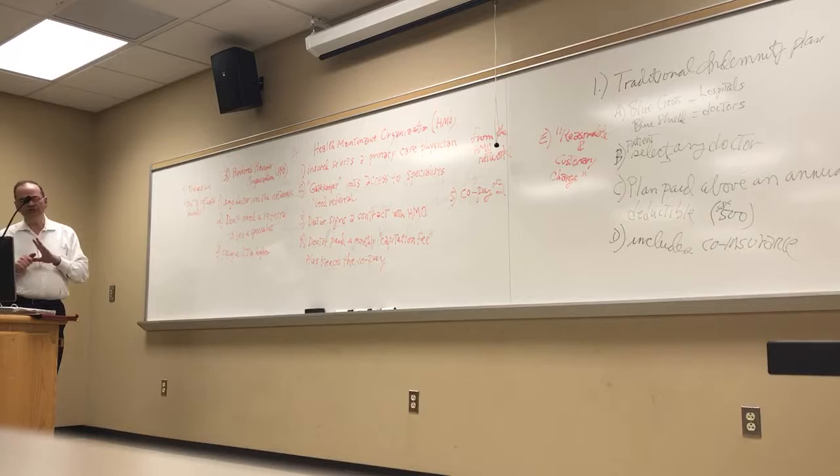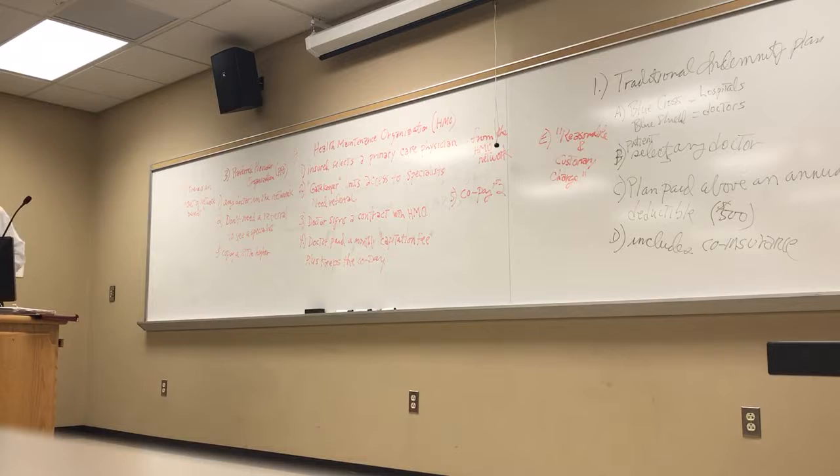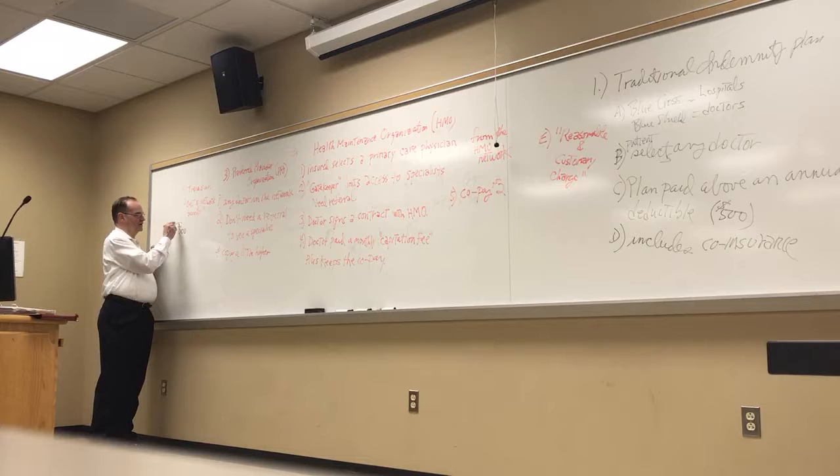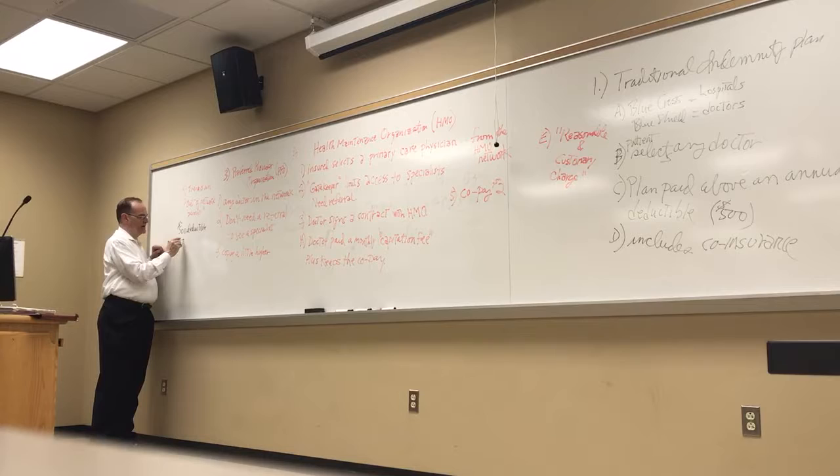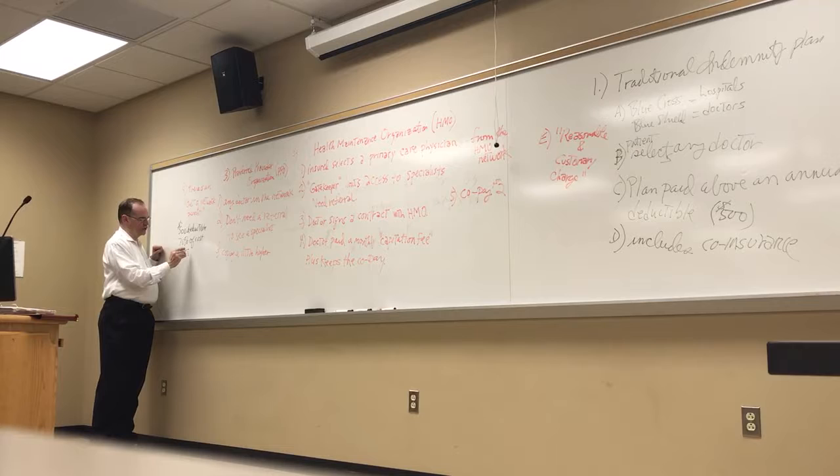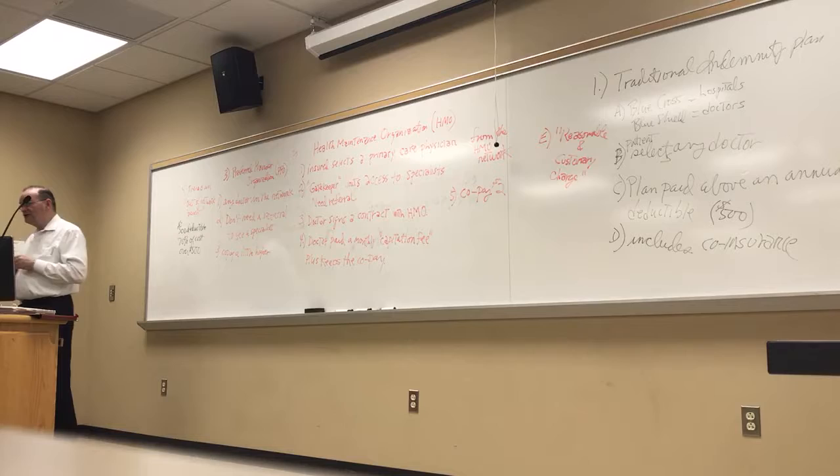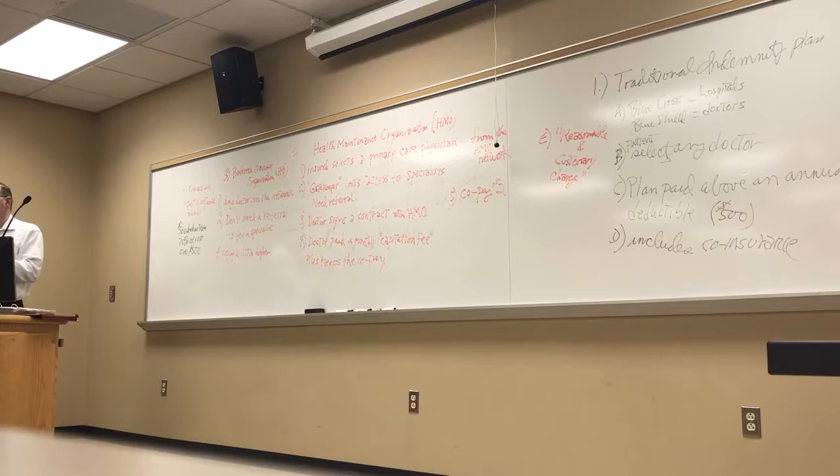Usually the way it works is there's a $500 deductible and they pay 70% of the cost over the $500. So they're making you eat the $500 and they're punishing you for not using one of their doctors, and they're also making you co-insure 30% of the cost over the $500.